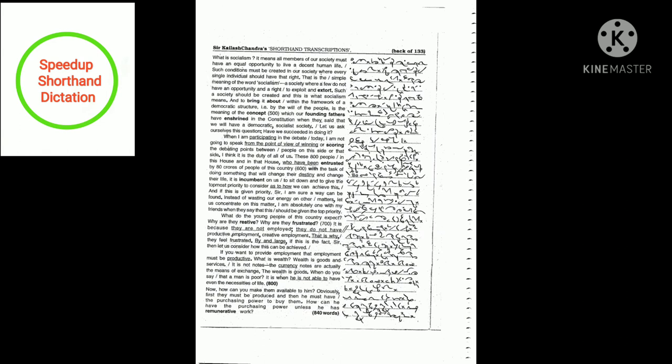It means all members of our society must have an equal opportunity to live a decent human life. Such conditions must be created in our society where every single individual should have that right. That is the simple meaning of the word socialism. A society where a few do not have an opportunity and a right to exploit and extort.